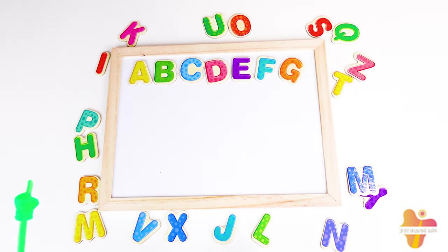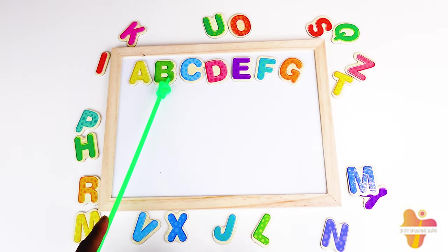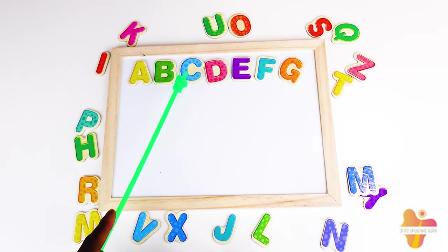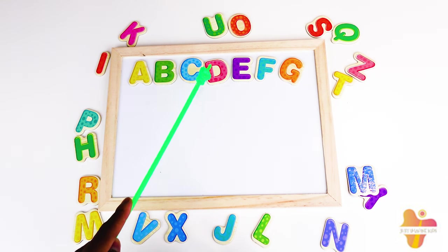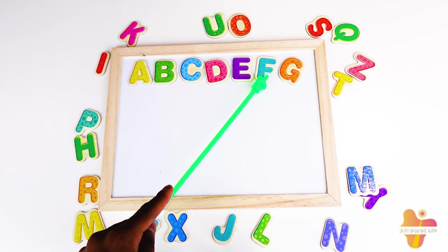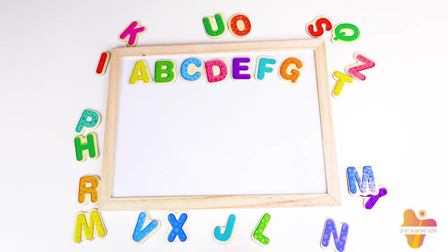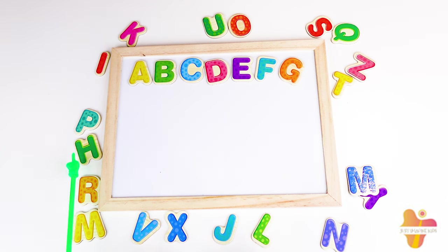For the first row we have Big A, Big B, Big C, Big D, Big E, Big F, Big G. Now we need Big H. Oh, here is Big H!